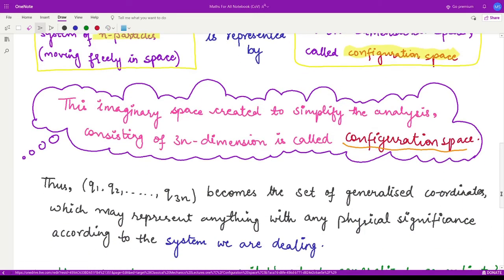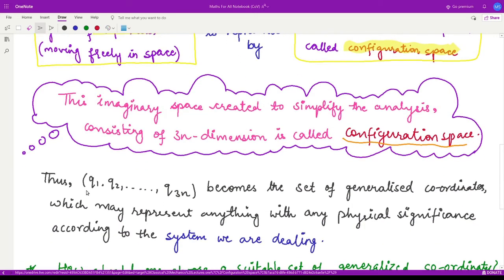So thus, the q1, q2 up to q3n becomes the set of generalized coordinates for this new system, which may represent anything with any physical significance. That means, this q1 could represent any physical quantity, q2 could represent any physical quantity and similarly others. So, and this could change according to whatever the system we are dealing with.